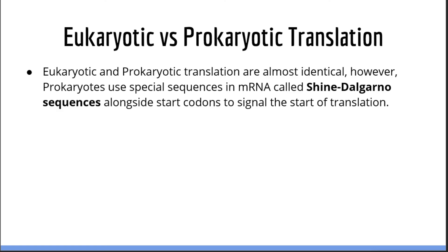Throughout our discussion of translation, we have not mentioned the differences between eukaryotic and prokaryotic translation. This is because they are very similar and the differences are not relevant for the USMLE Step 1. The only thing to know is that prokaryotes use 50S and 30S ribosomal subunits, as well as Shine-Dalgarno sequences. Shine-Dalgarno sequences are special mRNA sequences which function similarly to start codons — they signal the start of translation. So if you see a question stem mention Shine-Dalgarno sequences, it is referring to prokaryotic translation.